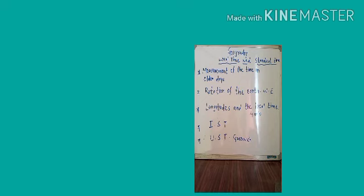The last important point is the Universal Standard Time, that is UST. The Universal Standard Time has been decided with reference to the prime meridian, that is zero degree longitude. The local time at Greenwich — Greenwich Mean Time — which is in England, is considered to be the international standard time. The world has been divided into 24 time zones. With reference to GMT, the differences in the standard times of various countries are calculated. For example, the Indian Standard Time is ahead of Greenwich Mean Time by 5 hours and 30 minutes.